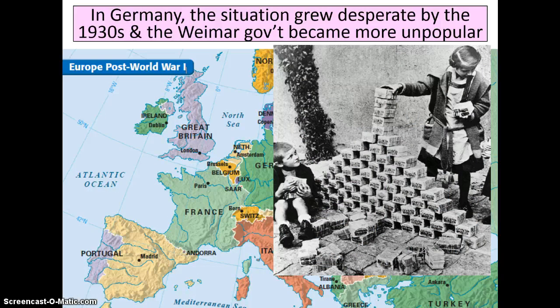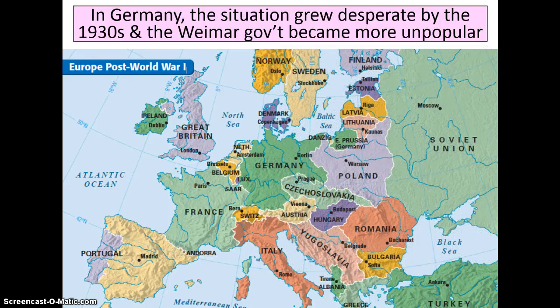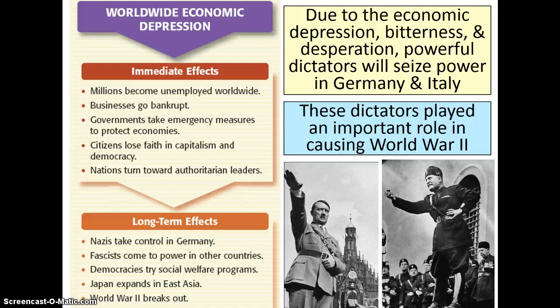Before we get to the rise of those totalitarian leaders, we have to take a moment and talk about the Weimar government in Germany, which the Germans were hating on — not only because of the Depression, but also because these are the guys who actually ended up signing the Treaty of Versailles. There's resentment towards them for that. The Italians were also super upset because they didn't get what they wanted from joining the Allies during World War I, which was the land promised to them in Austria.